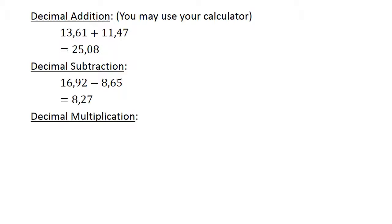Decimal multiplication. Zero point nine one times zero point two eight equals zero point two five four eight.